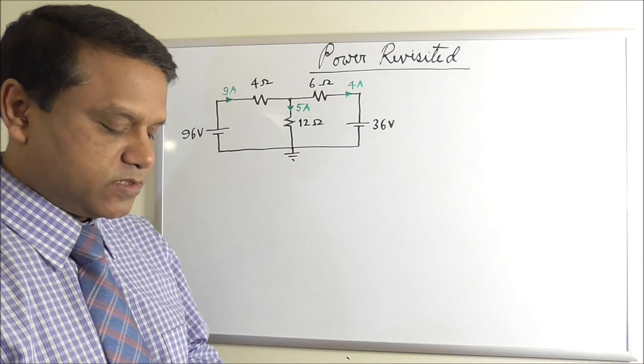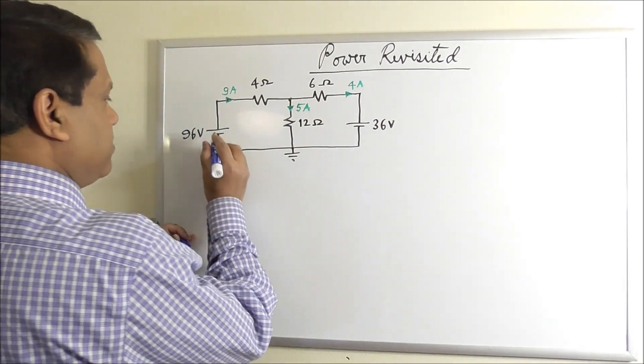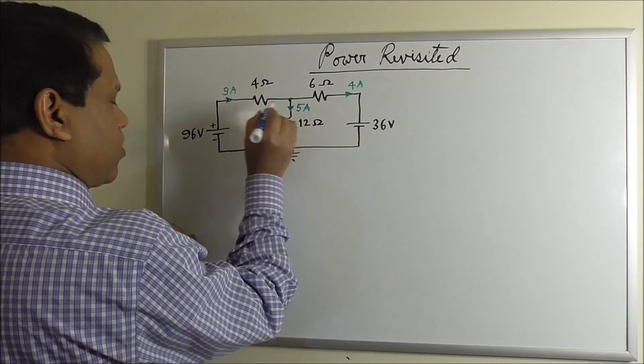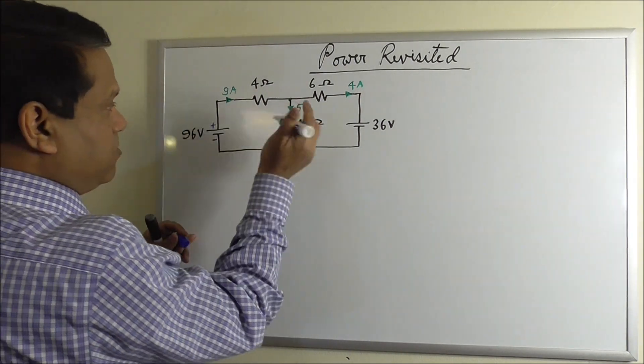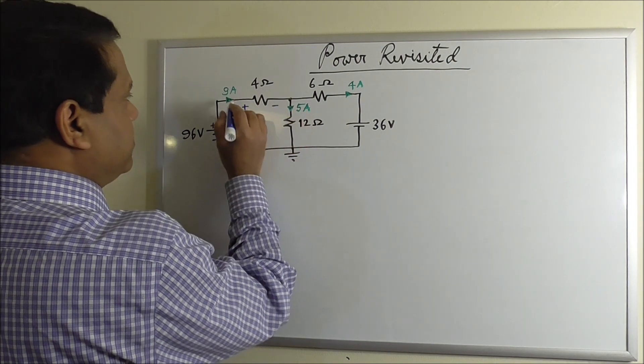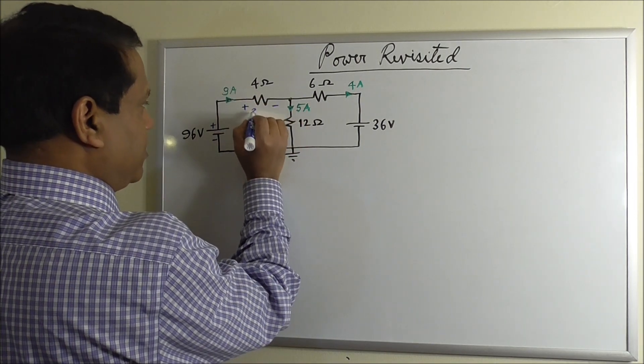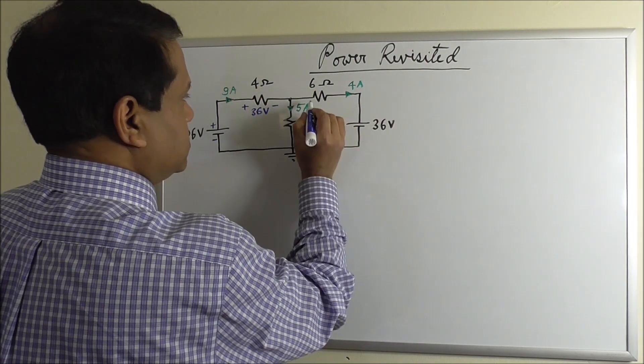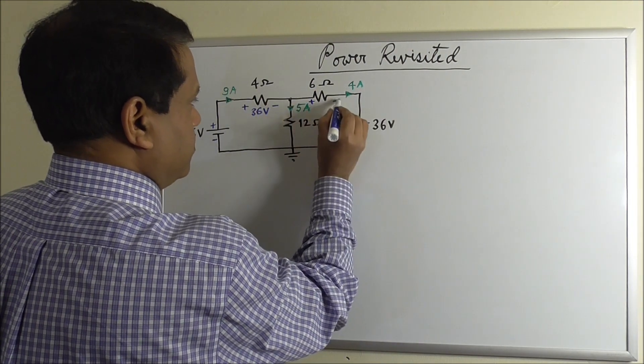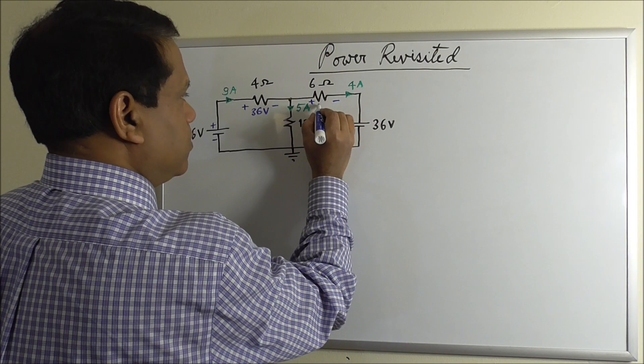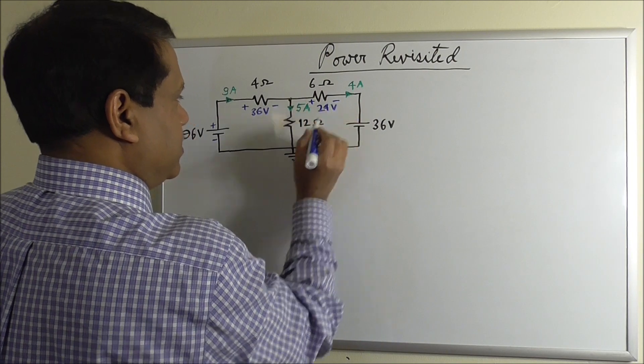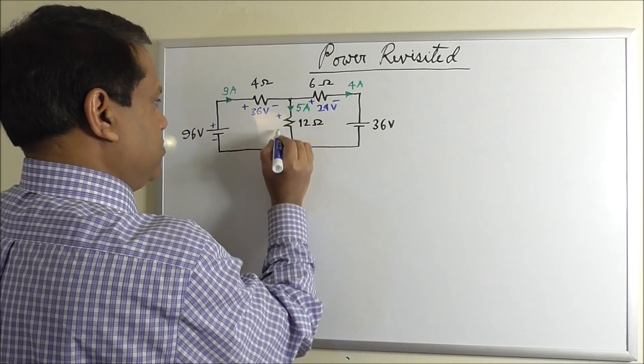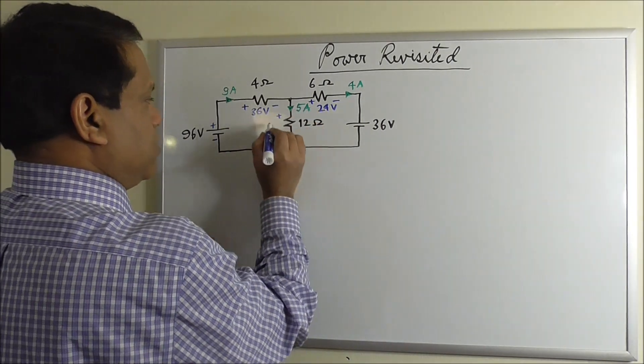Let's first look at the voltage drops. So here we have a voltage rise, and there is a drop in this direction, because current is flowing this way, and that will be 4 times 9, 36 volt. Current is flowing this way, so here again a drop, will be 6 times 4, 24 volt. And current is flowing downward in this branch, so voltage will be 5 times 12, 60 volt.